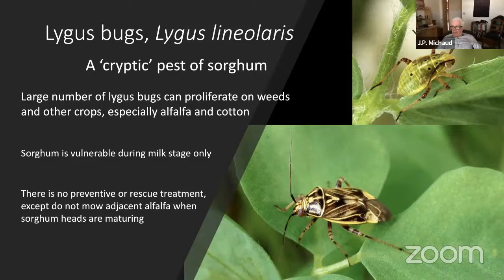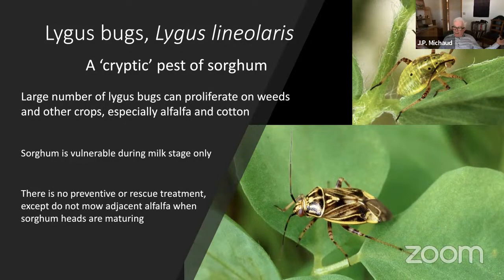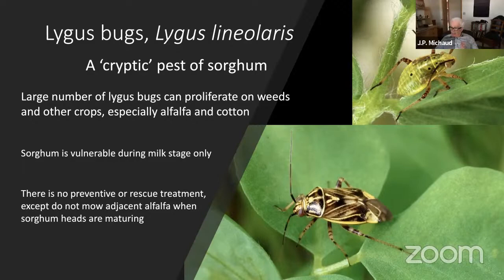I call lygus bugs a cryptic pest of sorghum because most farmers never know what hit them. All you see is a band of empty seed capsules in the head, often mistaken for bird damage. But it is caused by adult lygus bugs migrating into sorghum and then leaving as quickly as they came. Wild mustards are a good host for false chinch bugs and they can do similar damage, but it takes a lot more of them. Lygus bugs, however, are very prolific — they eat a wide range of plants and many of our crops can produce a lot of lygus bugs, even though those crops don't suffer any visible damage from them.